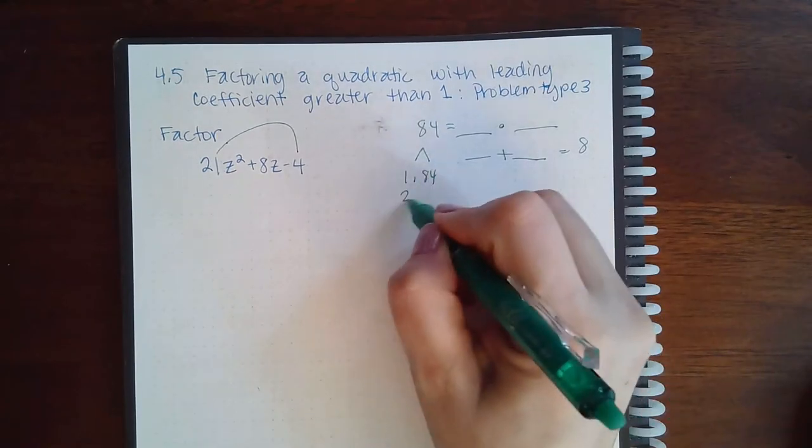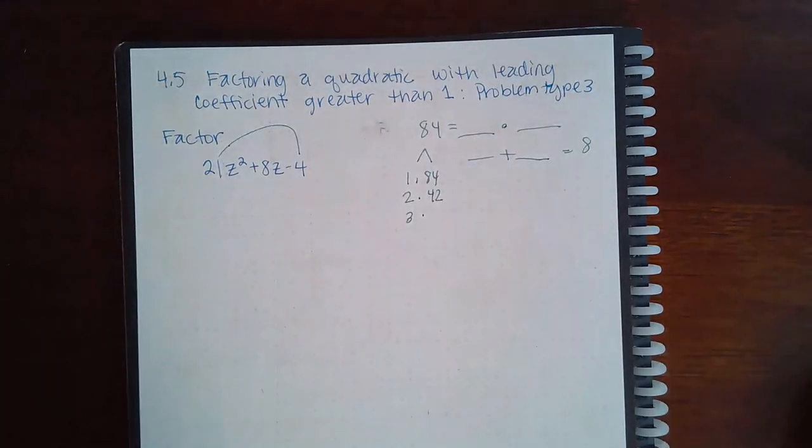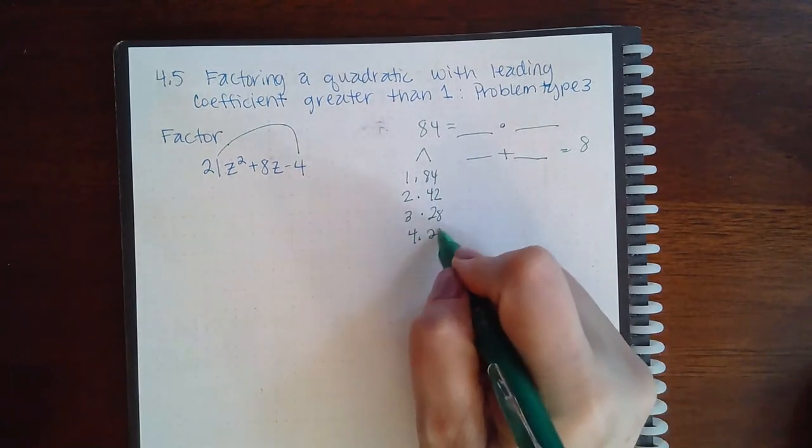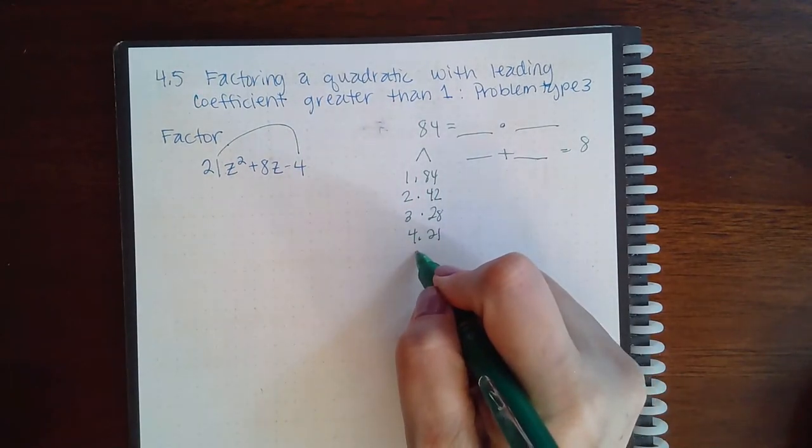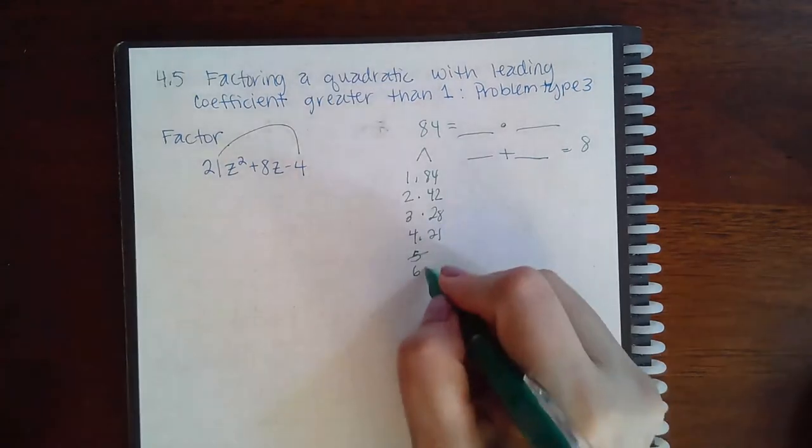That's 1 times 84, 2 times 42, 3 times 28, 4 times 21, 5, no, will not work, 6 times 14,